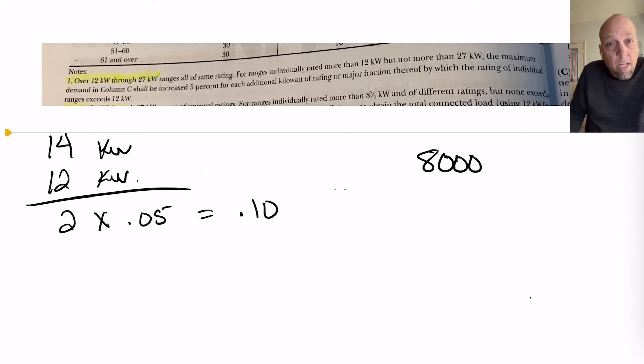Now, we have to put it back into the 8,000. Remember the 8? That was in column C, first row for between 9 and 12kW ranges, is 8. So, 8,000 watts, multiply it times 0.10. The 0.10 is right here.